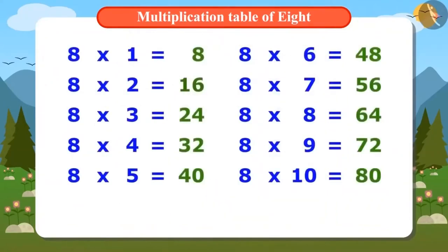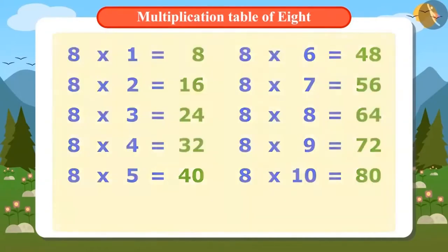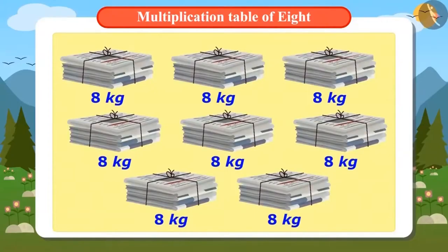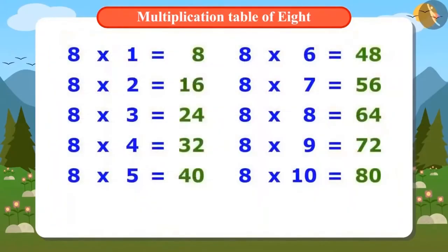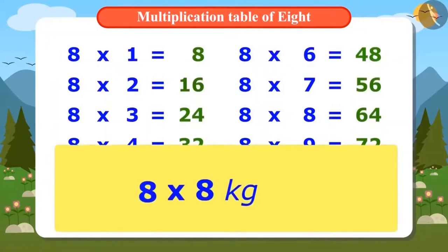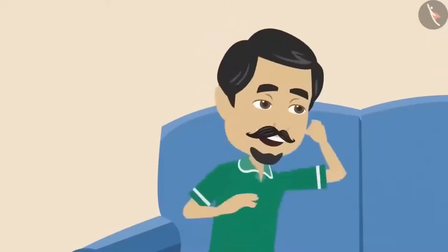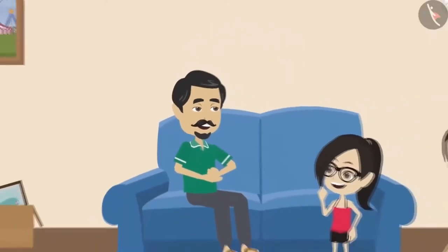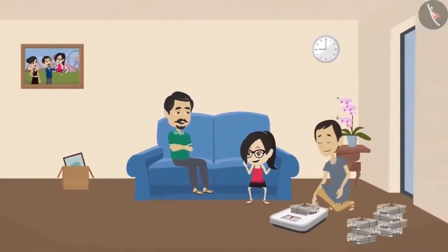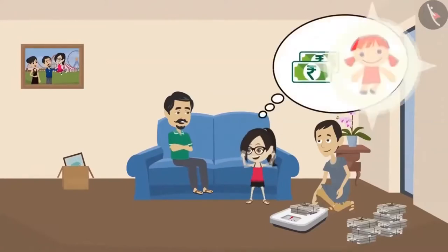Vandana has written down the entire multiplication table of 8. With the help of this table, Vandana can calculate the weight of 8 bundles of newspapers where each bundle weighs 8 kilograms. The answer will be 8×8, that is 64 kilograms. This means that these 8 bundles weighed 64 kilos. Vandana's father is happy because Vandana was able to do the calculation accurately without using pen and paper.